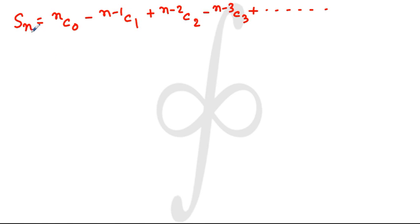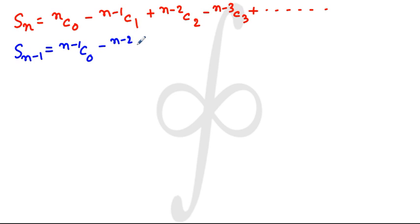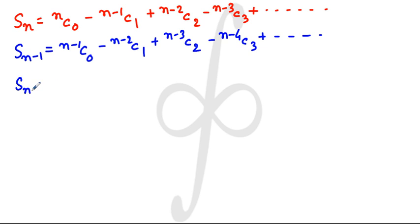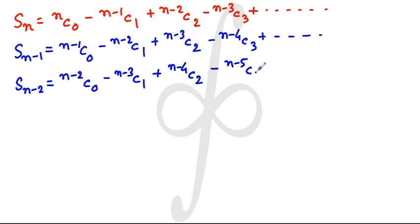The problem requires computing the sum Sn = nC0 minus (n-1)C1 plus (n-2)C2 minus (n-3)C3 and so on. To calculate this sum, we use the concept of periodicity. We write Sn-1 by replacing n with n-1: (n-1)C0 minus (n-2)C1 plus (n-3)C2 minus (n-4)C3 and so on. Similarly, Sn-2 becomes (n-2)C0 minus (n-3)C1 plus (n-4)C2 minus (n-5)C3 and so on.